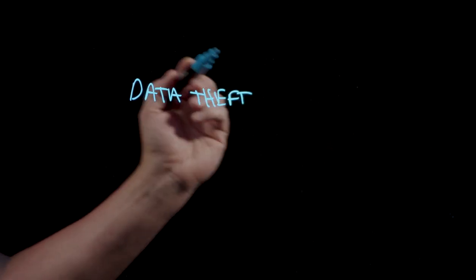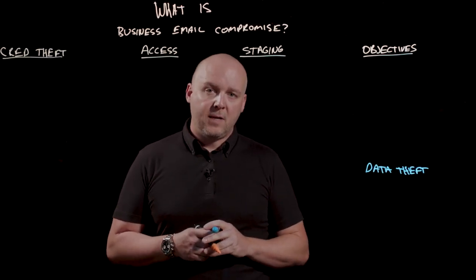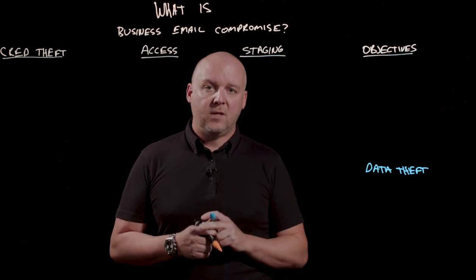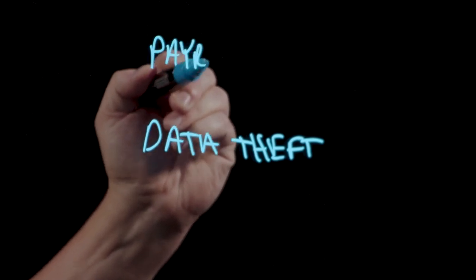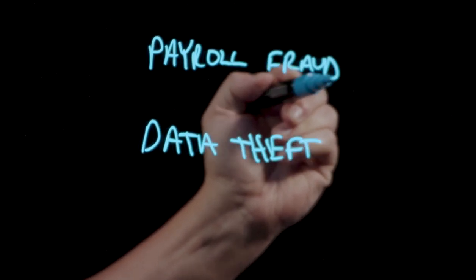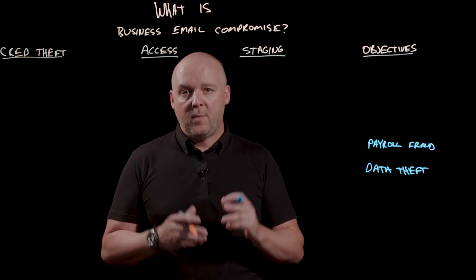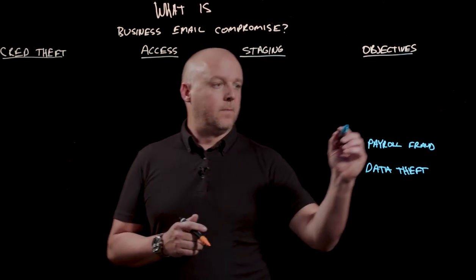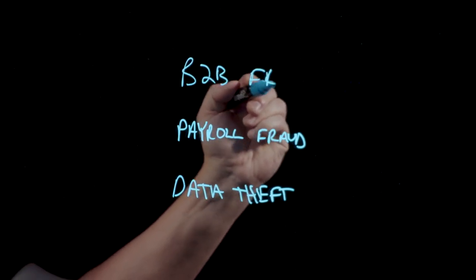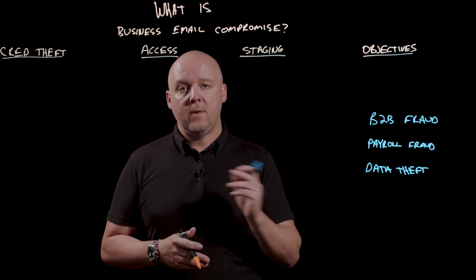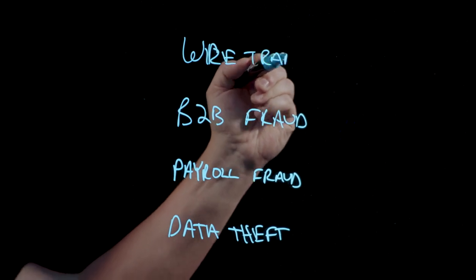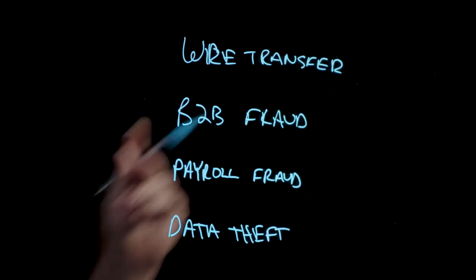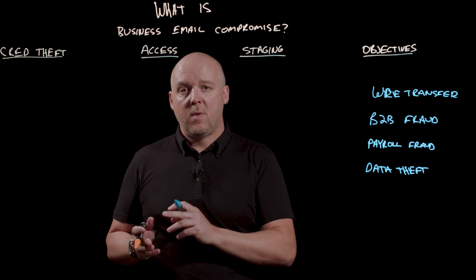Let's first start with the objectives and why attackers want access to your email accounts to begin with. Once in, attackers will oftentimes impersonate somebody in authority to try and convince somebody else to give them sensitive data. A common quick-win scenario is for attackers to get in and email HR or payroll and change the location of the upcoming paycheck for the victim who they just compromised. In business-to-business fraud, attackers will send invoices to business partners and get them to remit payment into accounts that they own.